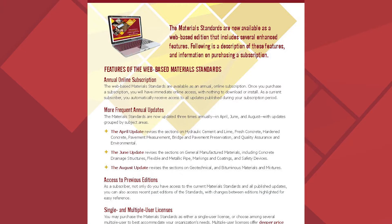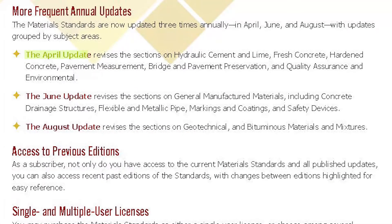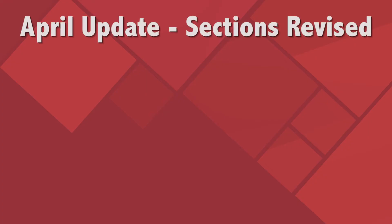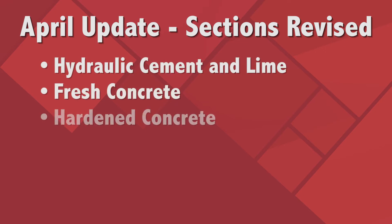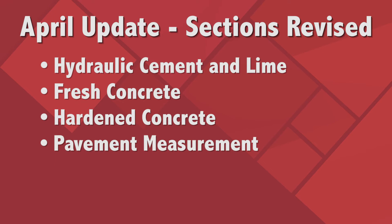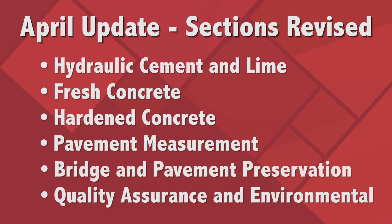The specifications are updated three times a year, in April, June, and August, with updates grouped by subject areas. The April update revises the sections on hydraulic cement and lime, fresh concrete, hardened concrete, pavement measurement, bridge and pavement preservation, and quality assurance and environmental.